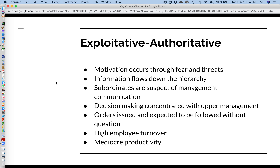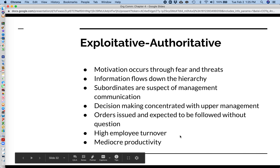The exploitative authoritative method is the method that was employed most widely prior to the advent of the human relations school of thought. In this model, employees are motivated by fear and through threats. Information flows from the top down. Employees are naturally suspect of management. Decision-making is concentrated within upper management, orders are expected to be followed without question, and we see high employee turnover and mediocre productivity.